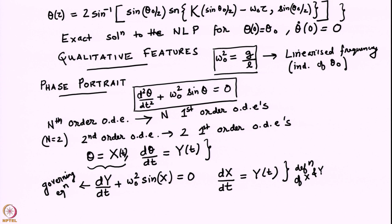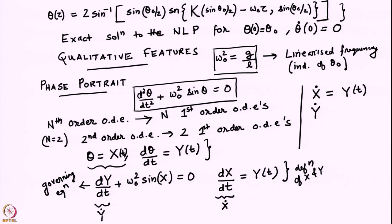We have written the system as 2 first order ordinary differential equations. Using dot notation: X-dot is equal to Y(t), and Y-dot is equal to minus ω₀² sin X. Those two equations govern how X and Y evolve in phase space.